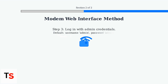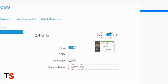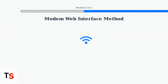Log in using your administrator credentials. The default username and password are often both 'admin', but for security reasons, you should change these immediately after your first login. Once logged in, find the Wi-Fi or wireless settings section in the modem's interface.